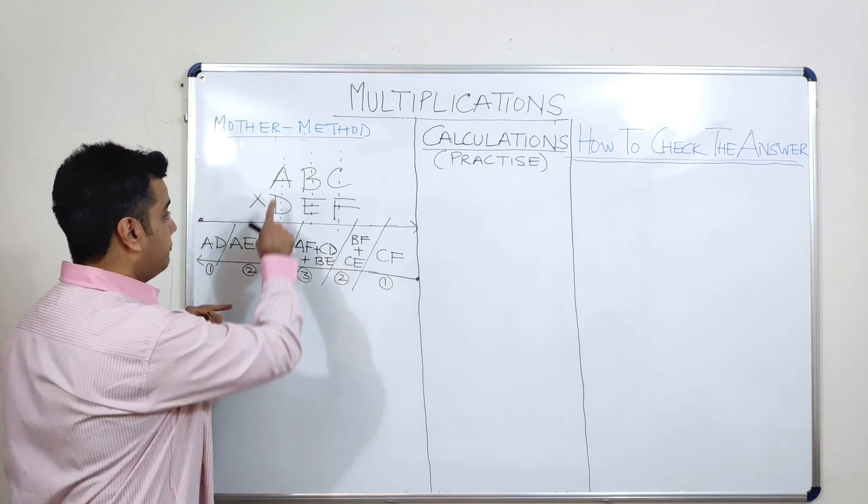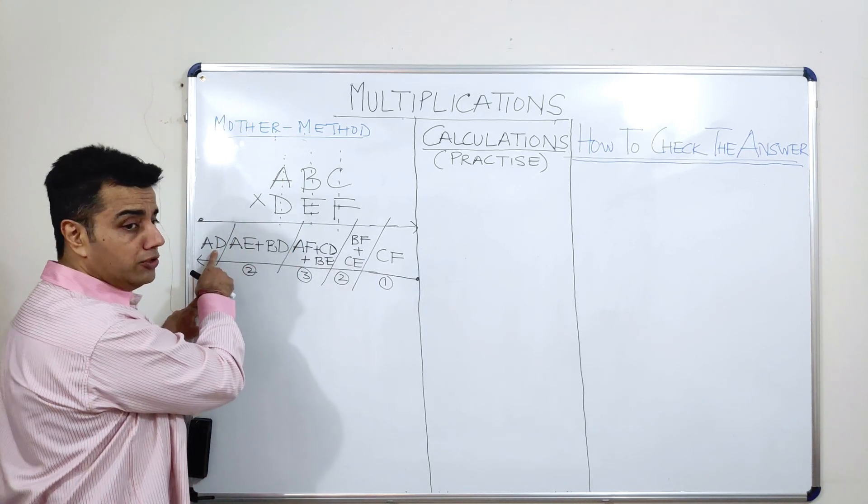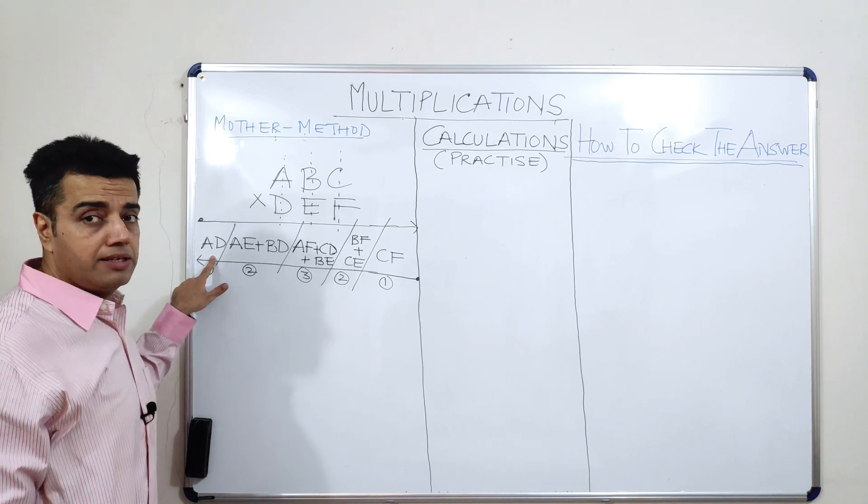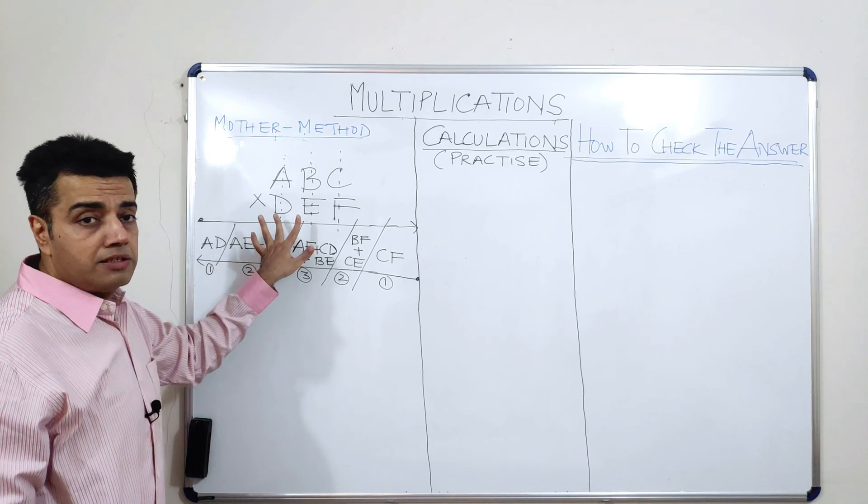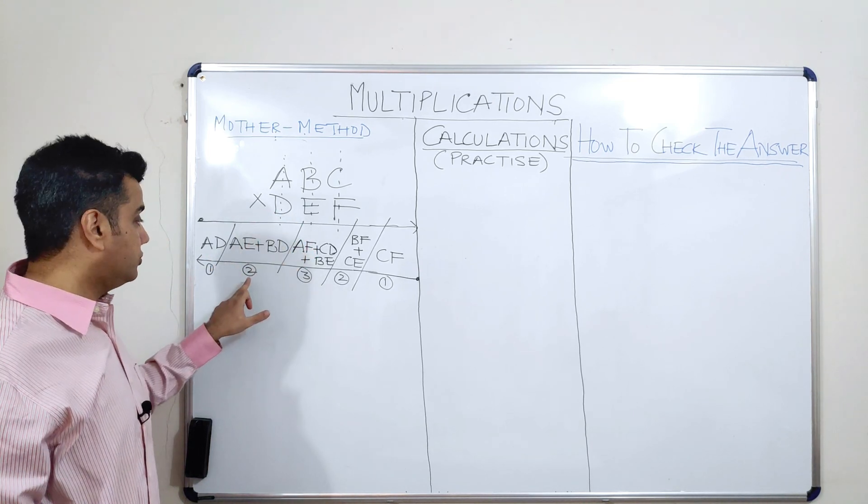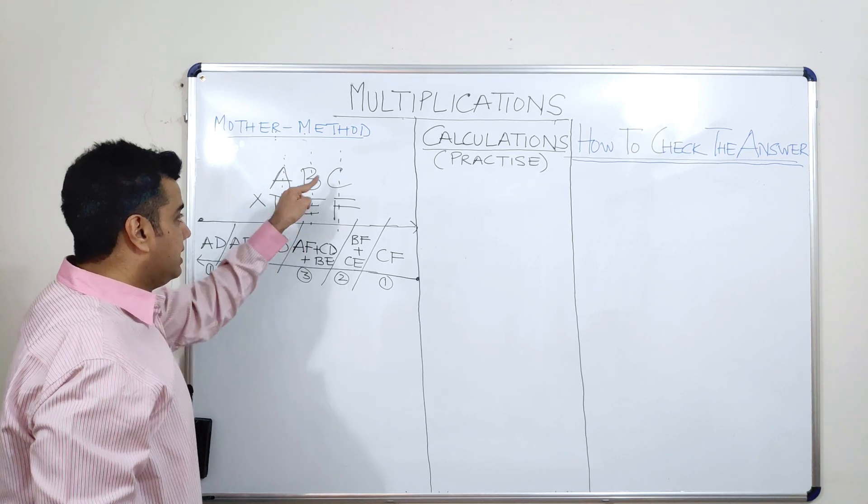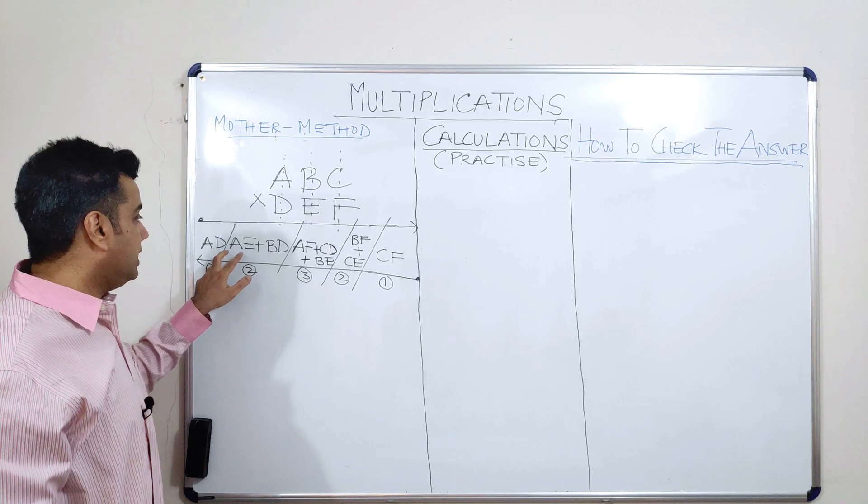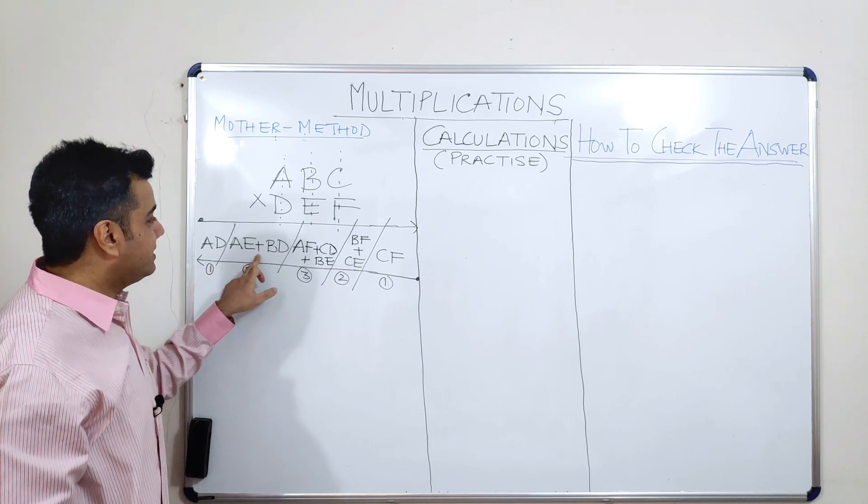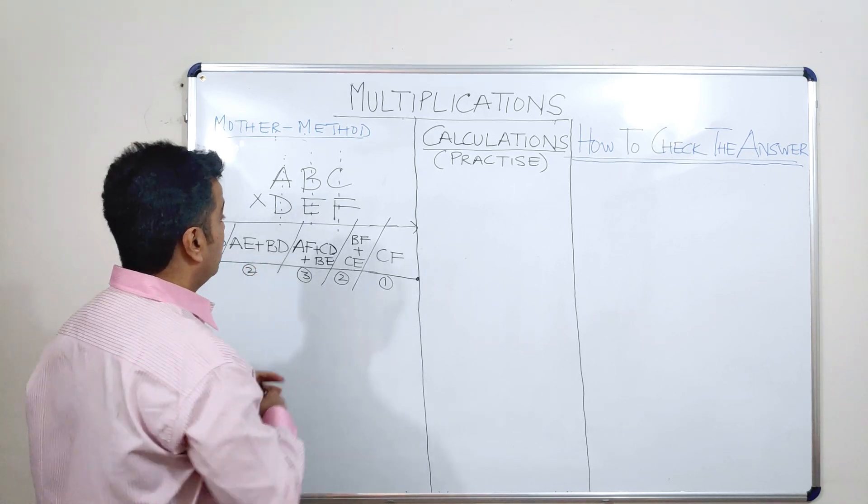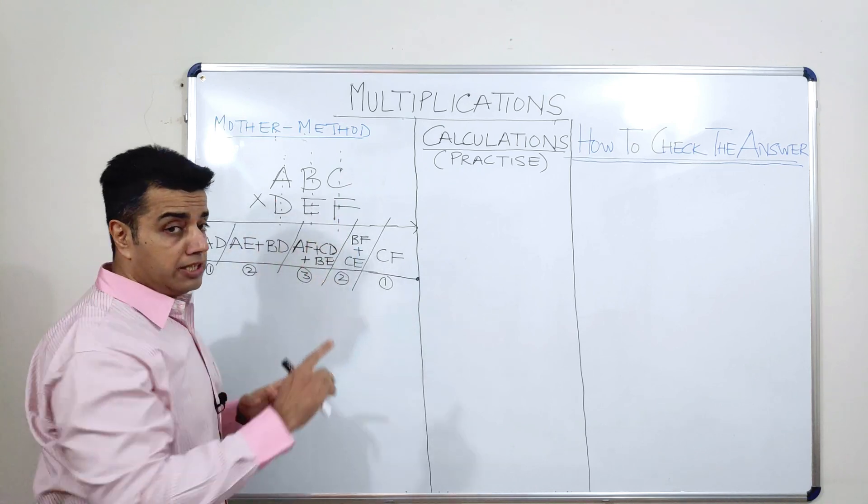So, how do I start? First, I take only 1 column which is just like saying A into D. Then, I am taking the first 2 columns. When I take the first 2 columns, what am I supposed to do? I am supposed to cross multiply and add. So, AE means A into E plus B into D.